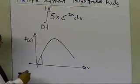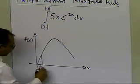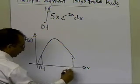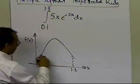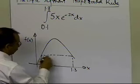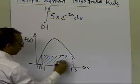And let's suppose if this number was 0.1, and this number is 1.3, then the single segment trapezoidal rule is just going to give you this much area here.